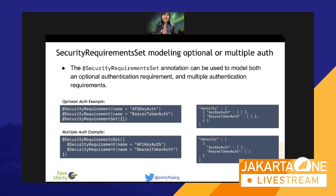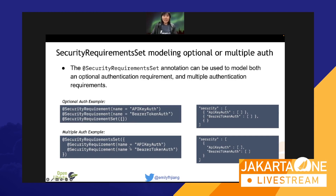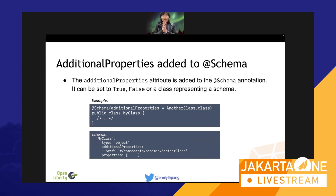Another feature is security requirements set, which can be used to model both optional authentication and multiple authentication. In one form, an empty set makes it optional; in the other, you have open brackets containing both — modeling multiple authentication. Third, additional properties can be added to the schema. When you describe a schema with additional properties and generate the API response, you can see a reference to another class.